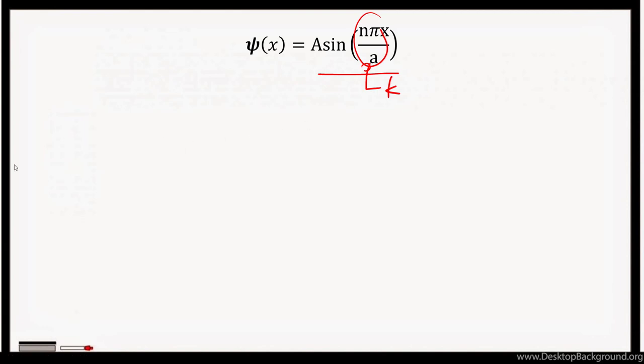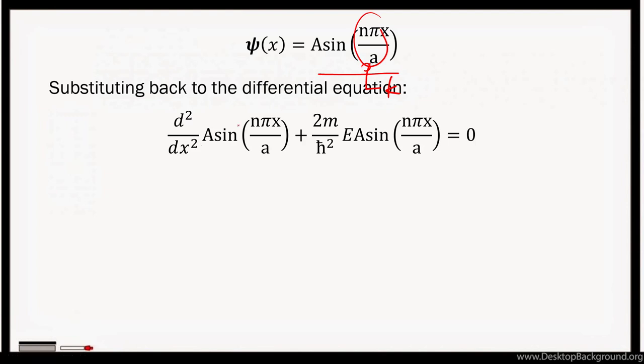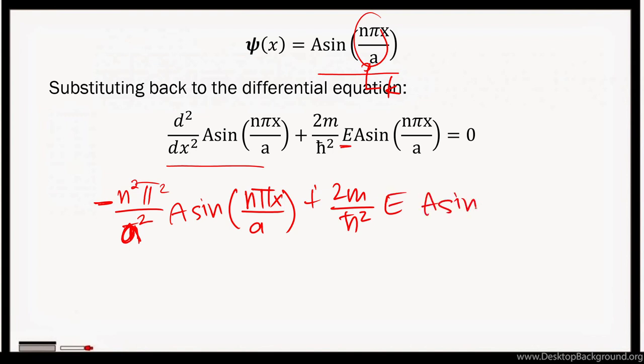Second derivative of A sin(nπx/a) plus (2m/ℏ²)E·A sin(nπx/a) equals 0. Getting the second derivative of this one, this is equal to -(n²π²/a²)·A sin(nπx/a). So this plus (2m/ℏ²)E·A sin(nπx/a) equals 0.